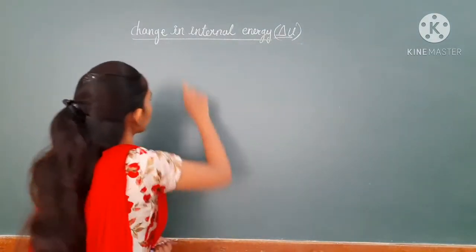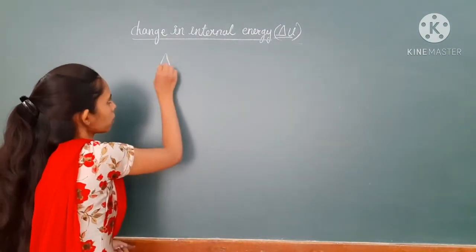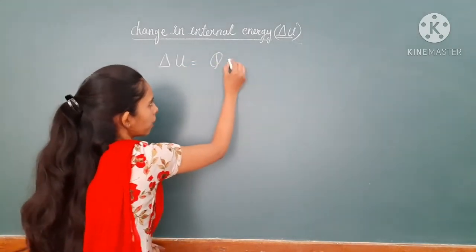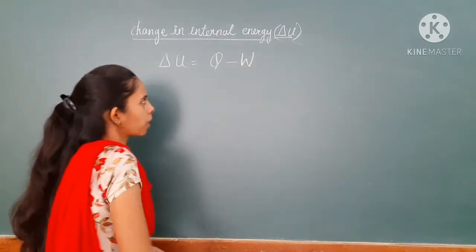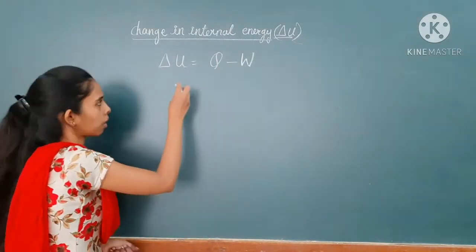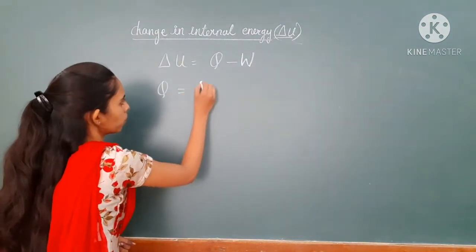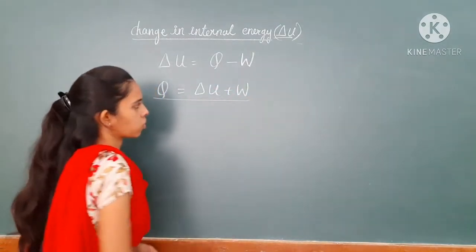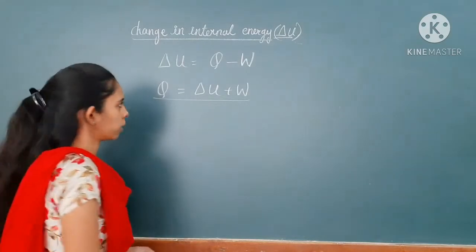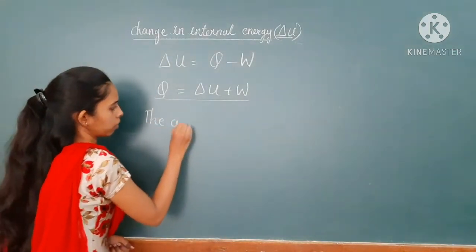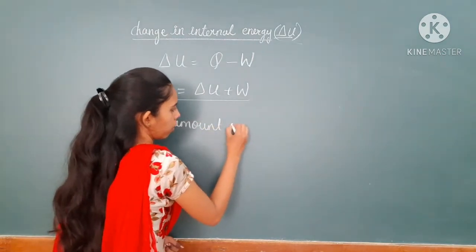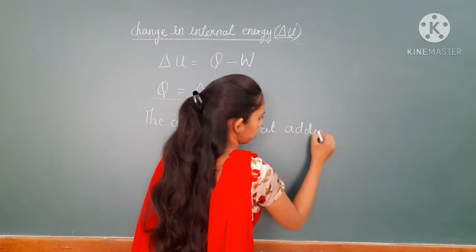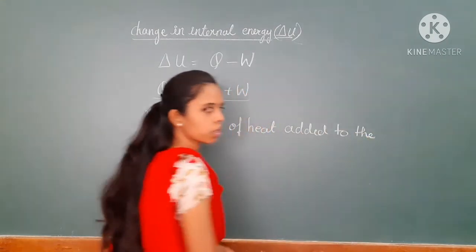Now what is change in internal energy? The change in internal energy is equal to the difference between the amount of heat applied to the system and the work done. This equation can be written in another form: Q is equal to delta U plus the work done. So this equation tells you the amount of heat added to the system.